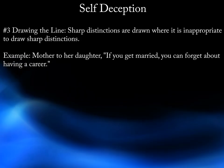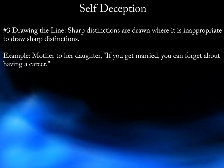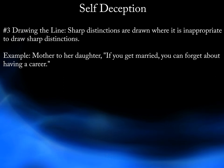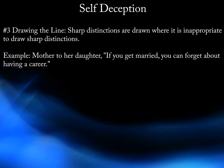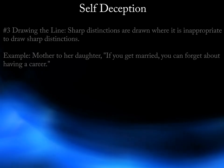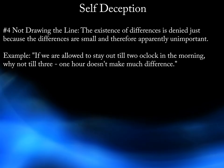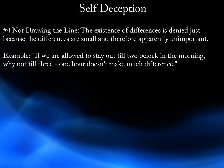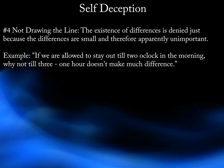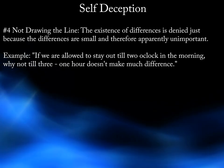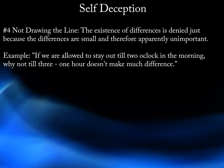3. Drawing the Line. Sharp distinctions are drawn where it is inappropriate to draw sharp distinctions. Example: Mother to her daughter — "If you get married, you can forget about having a career." 4. Not Drawing the Line. The existence of differences are denied just because the differences are small and therefore apparently unimportant. Example: "If we are allowed to stay out till 2 o'clock in the morning, why not till 3? One hour doesn't make much difference."